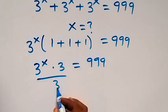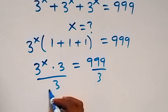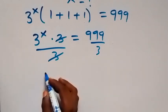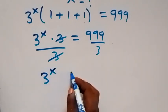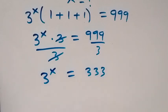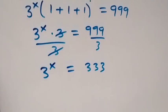Then divide both sides by 3 such that 3 cancel 3 here. Then this will become 3 raised to the power x equals to 333 here.